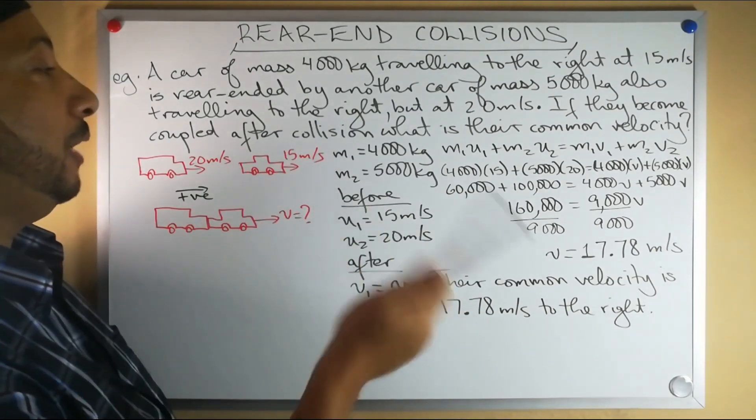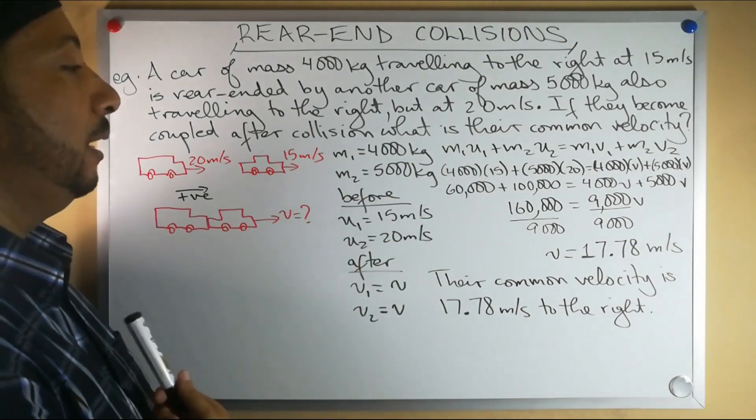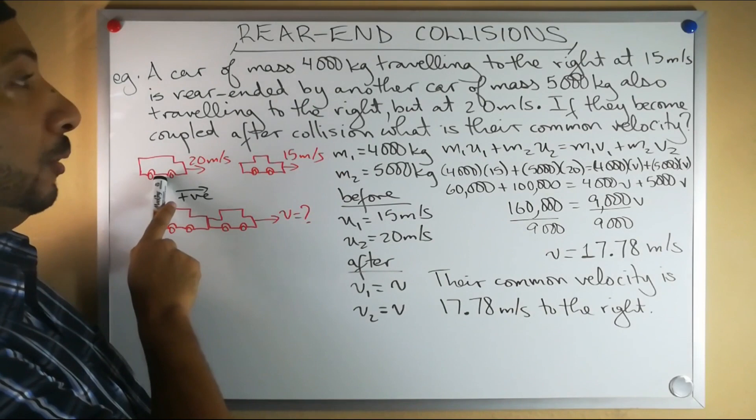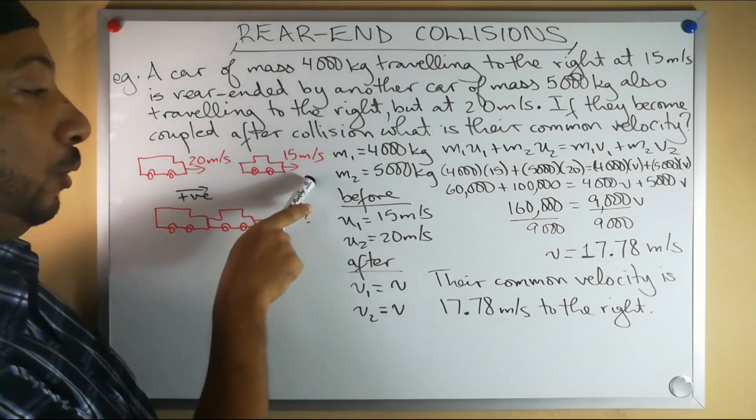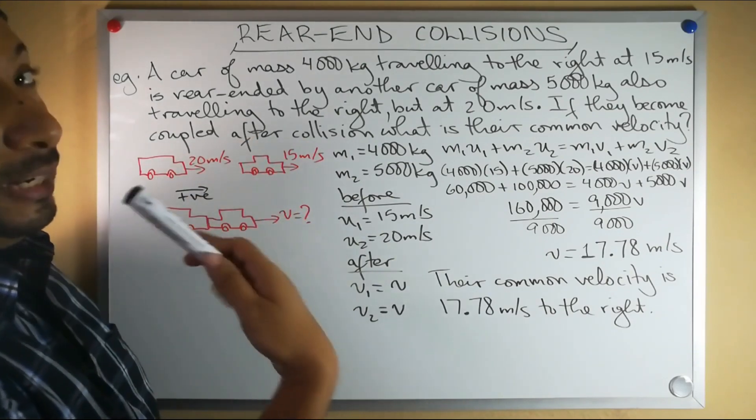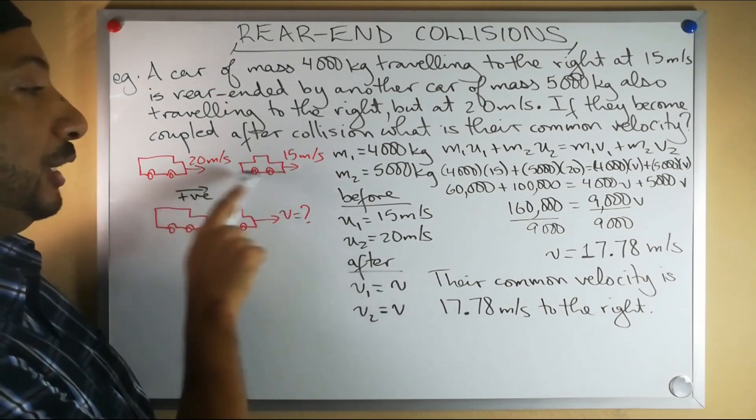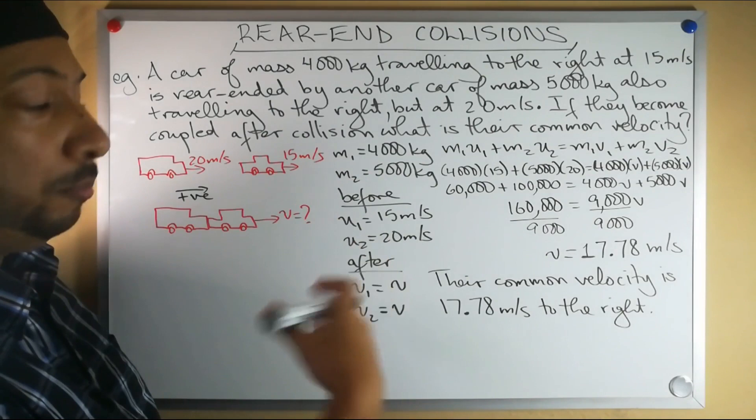If they become coupled after collision, what is their common velocity? We begin by drawing our diagram. This bigger truck traveling at a faster speed is behind the smaller car traveling at a slower speed. It rear-ends that car. We pick our positive direction to be to the right.